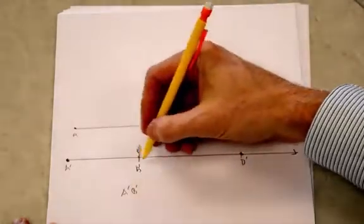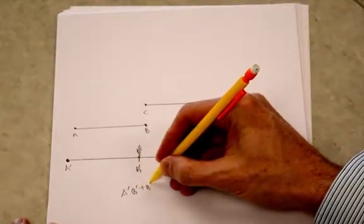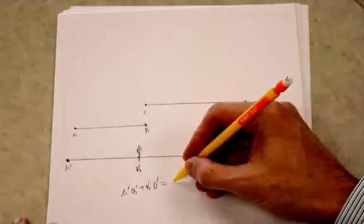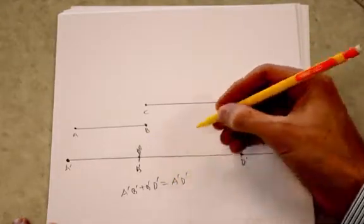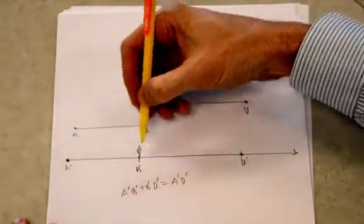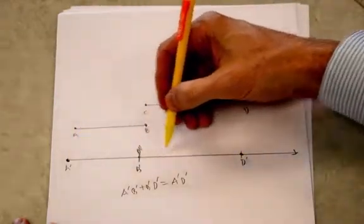So A prime, B prime is the first segment plus B prime, D prime equals the whole segment A prime, D prime. So the small segment A prime, B prime plus the small segment B prime, D prime makes the large segment.